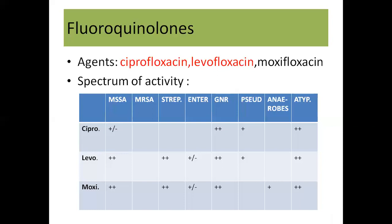Now, the similarities between these three drugs: all three are good for gram-negative bacteria and all are good for atypicals. So we won't worry about gram-negative and atypicals further. Between cipro and levo specifically, the similarities are that both are moderate to good for pseudomonas and both are poor for anaerobes. The difference between them is that levo is good for gram-positive bacteria, while cipro is poor for gram-positive bacteria.